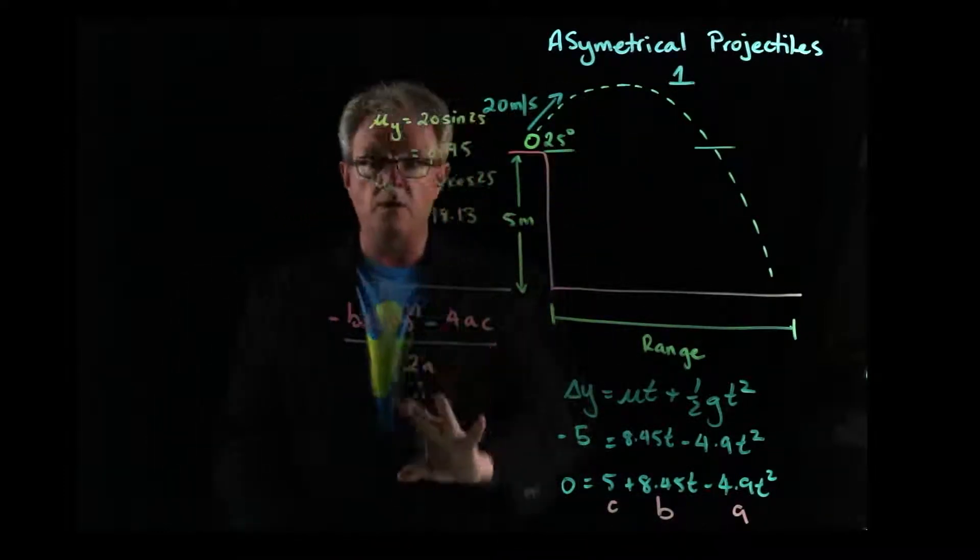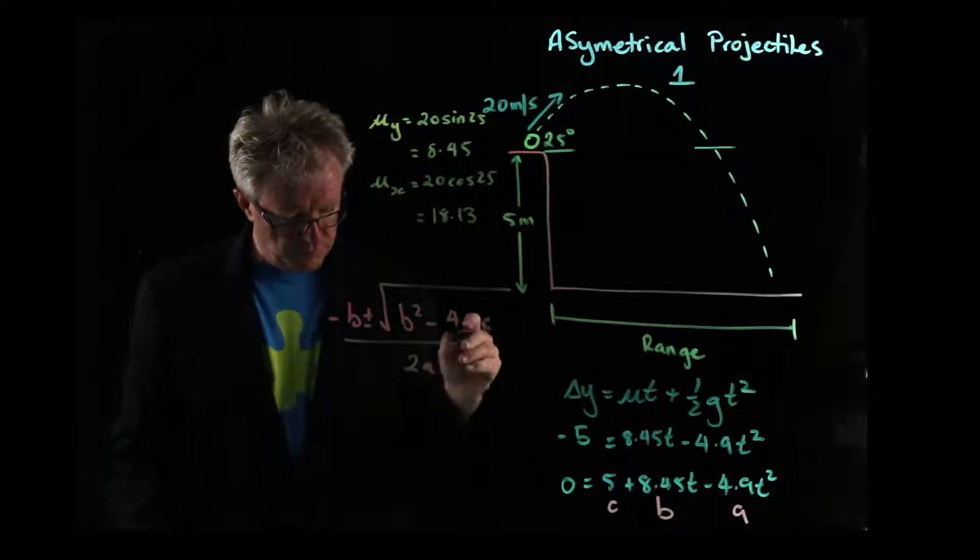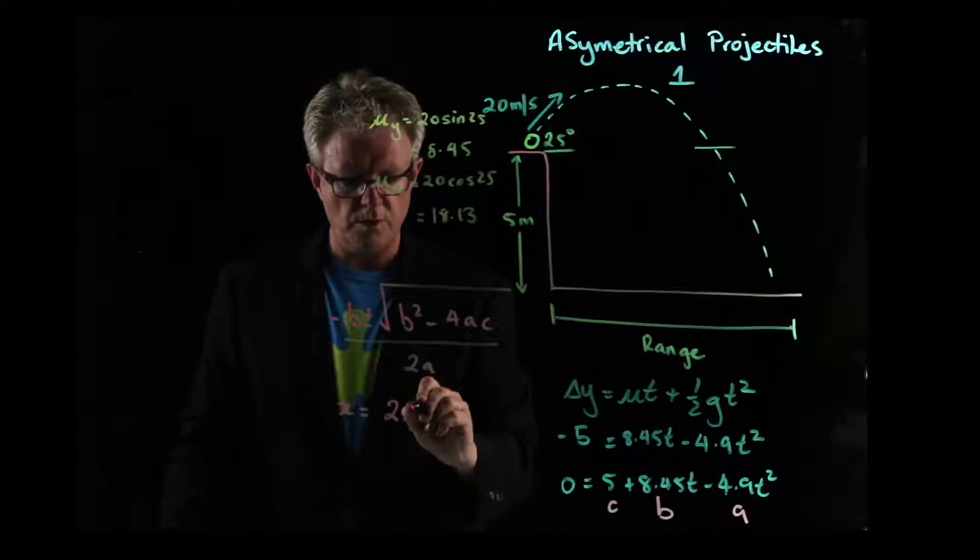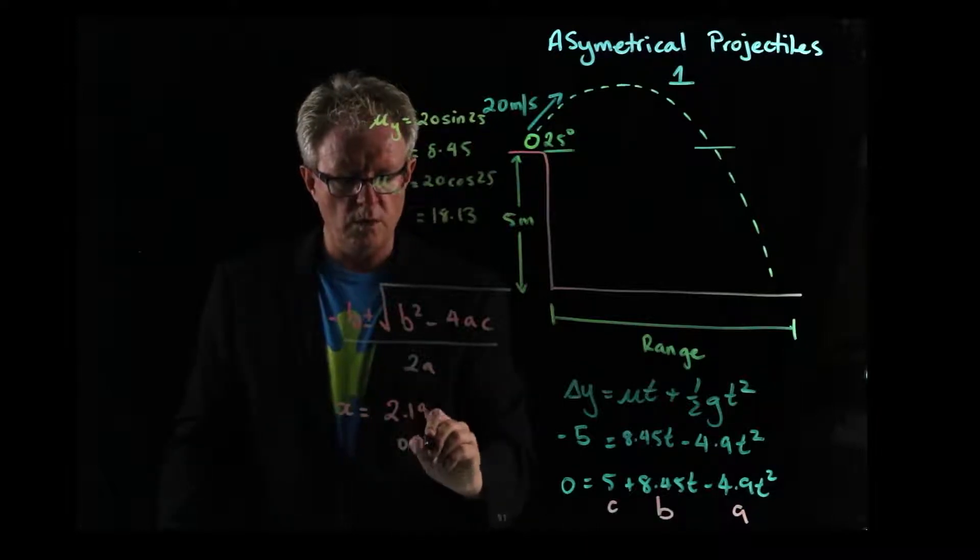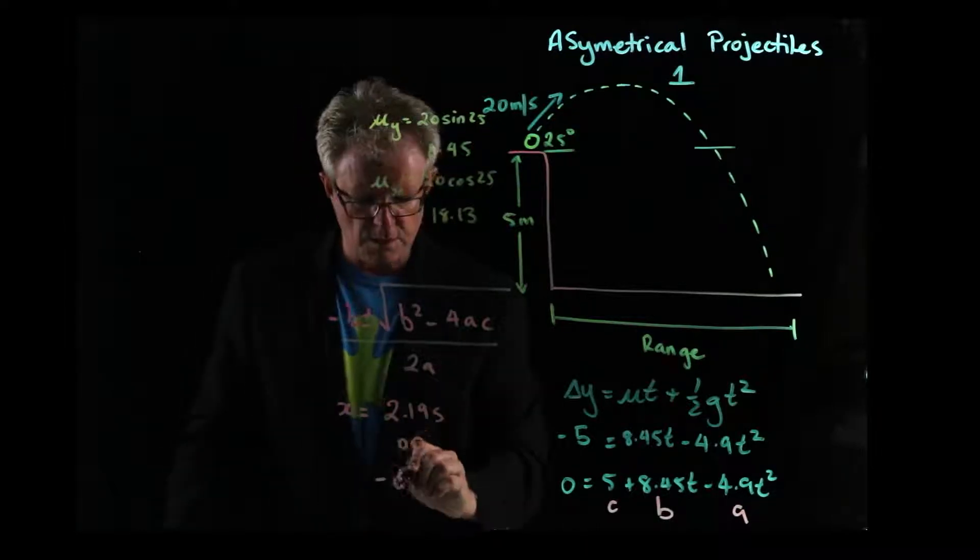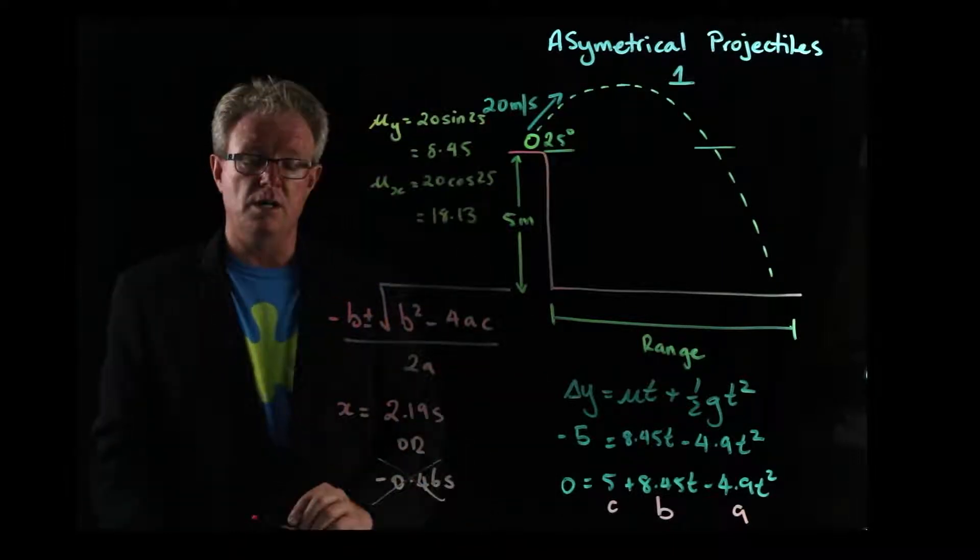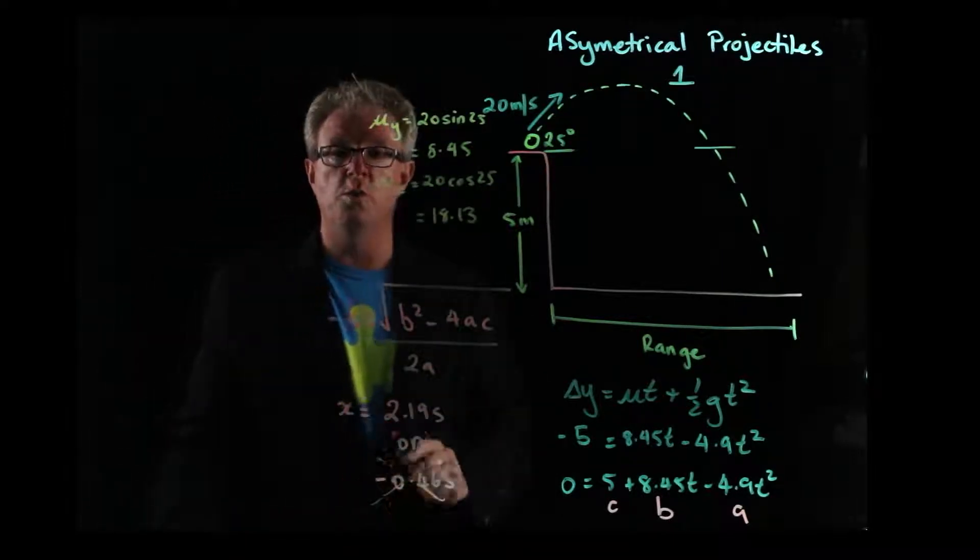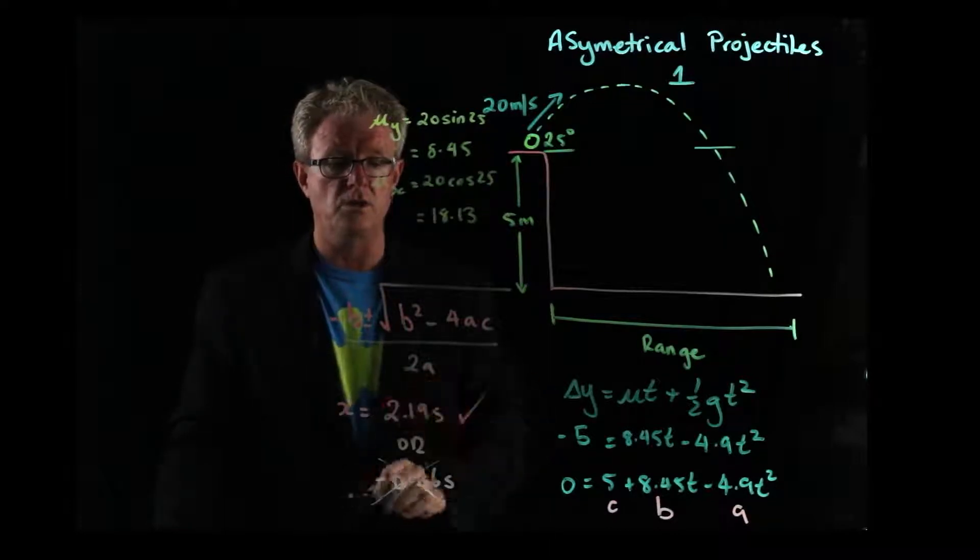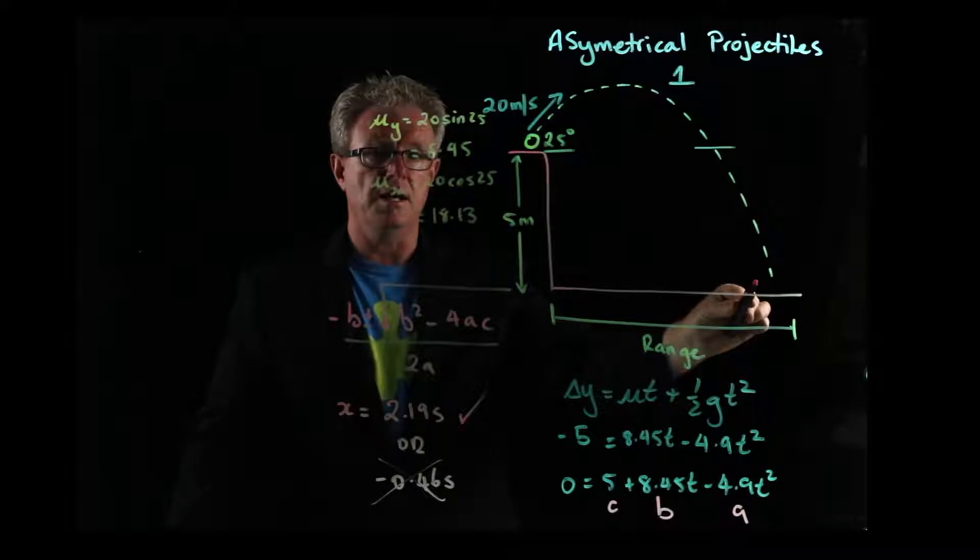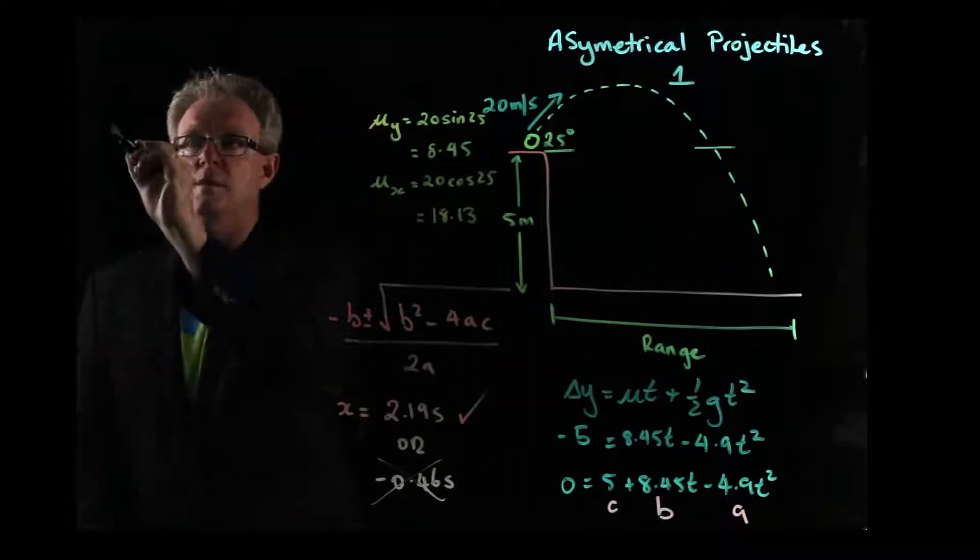So when we plug all those in, we get two possibilities. x is either equal to 2.19 seconds or minus 0.46 seconds. It's not going to be this one here. We can't have minus time, so we're going to have 2.19 seconds. That's the one that we're going to use for the time of flight to go from here down to there. So that's the time of flight.